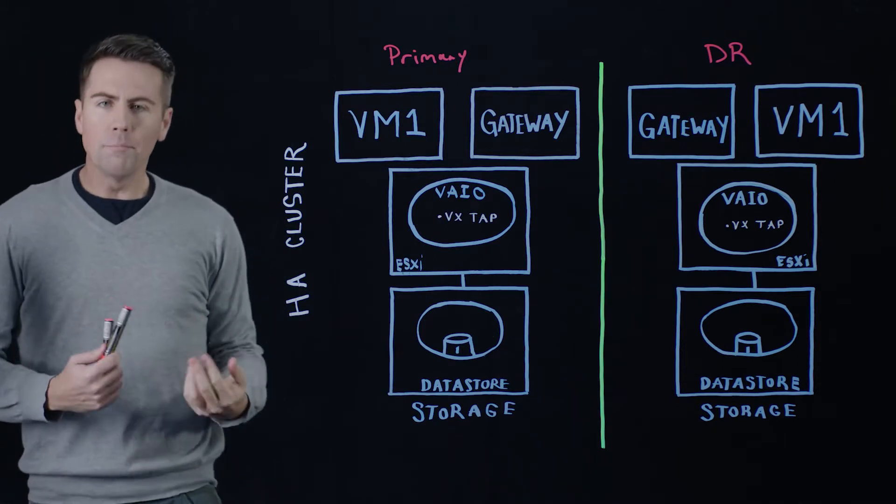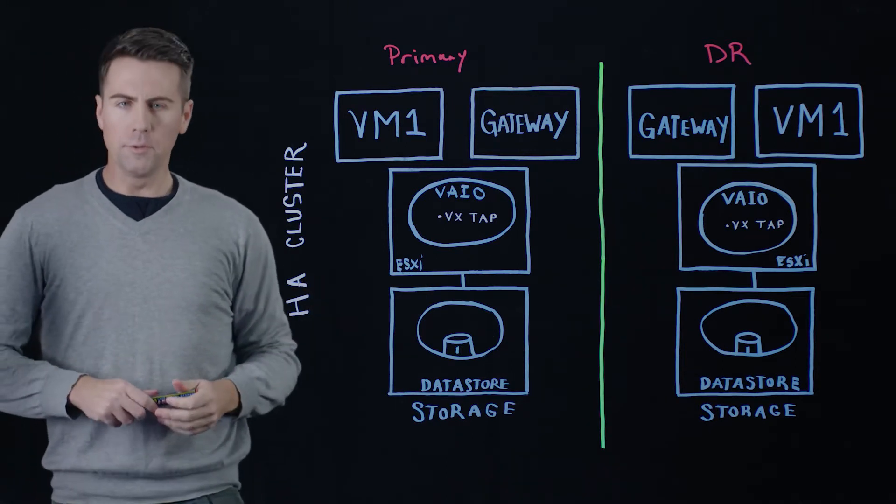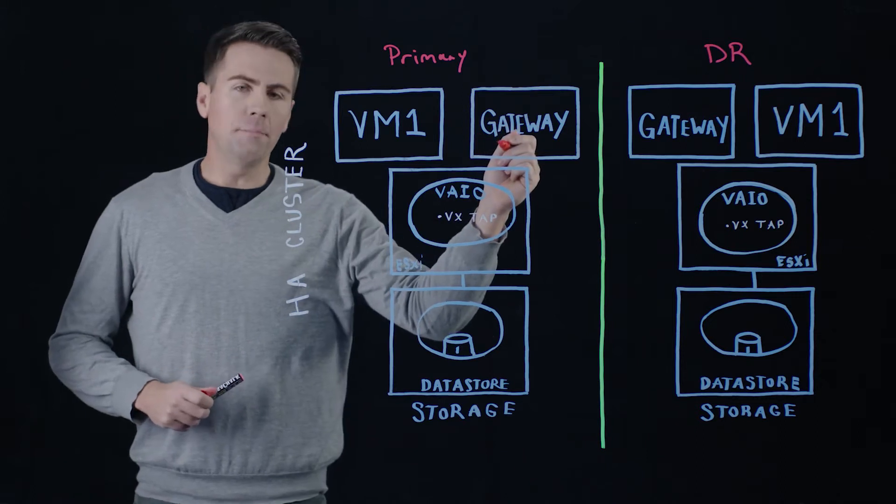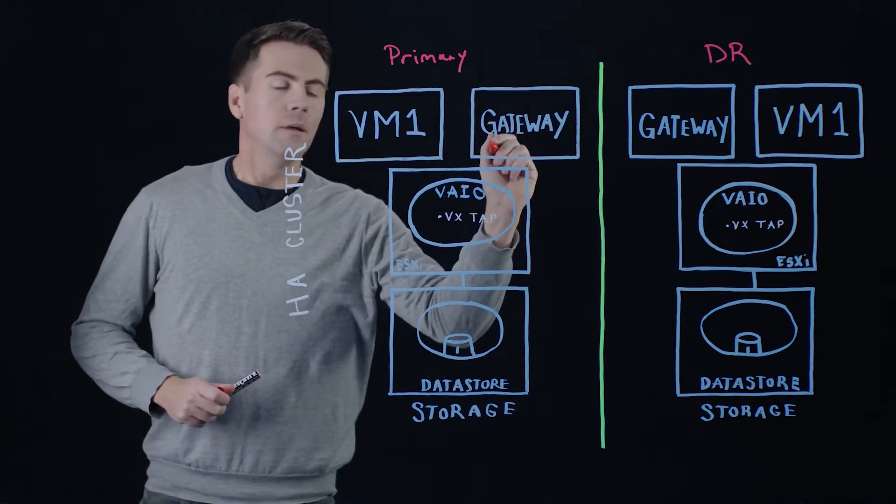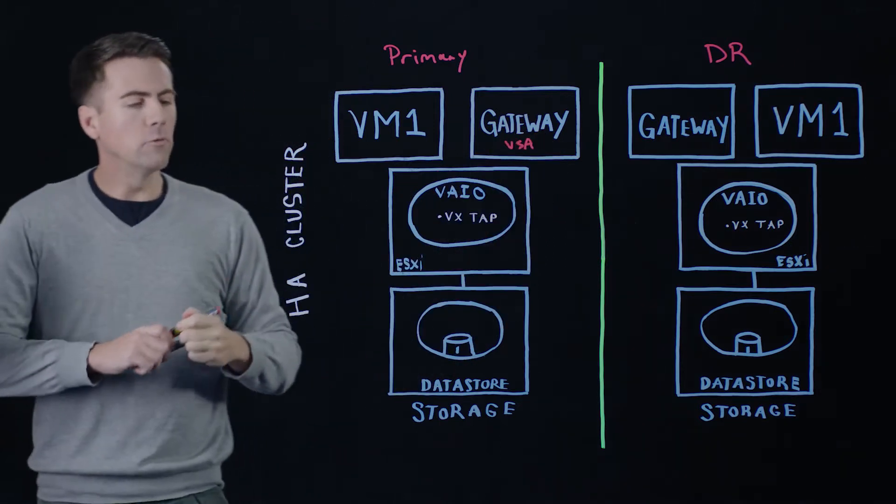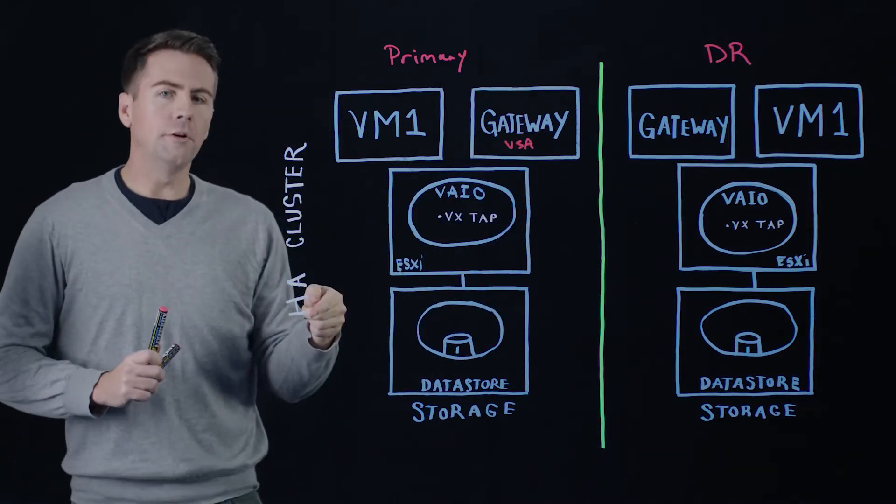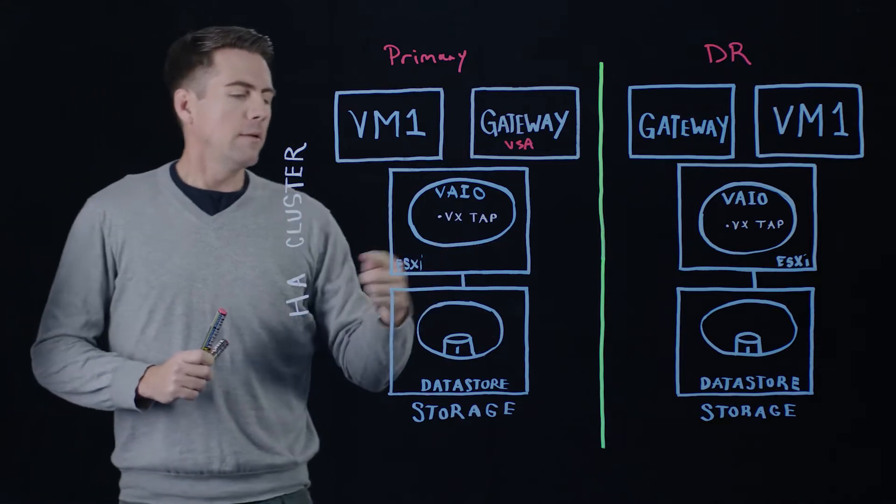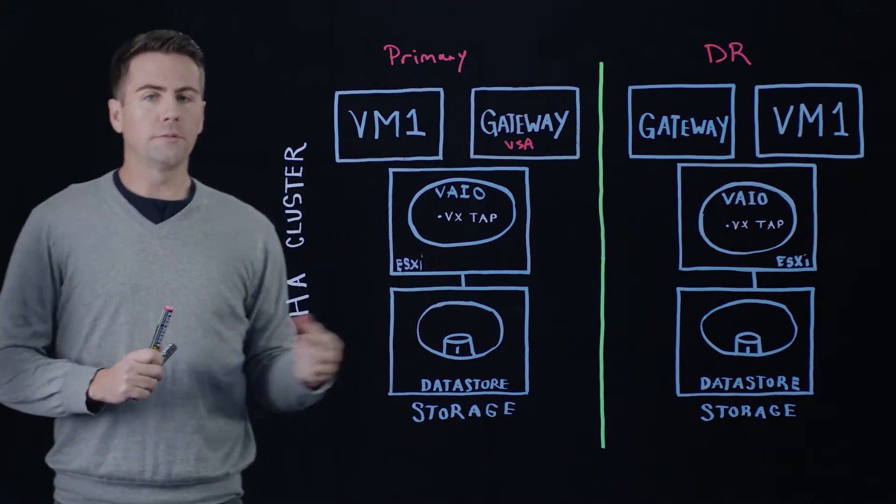There are two main components that make this whole process flow smoothly. The first is the Resiliency Platform Gateway. This is a virtual software appliance that runs here within a vSphere HA cluster. It actually can run on any one of the ESX hosts within that cluster.